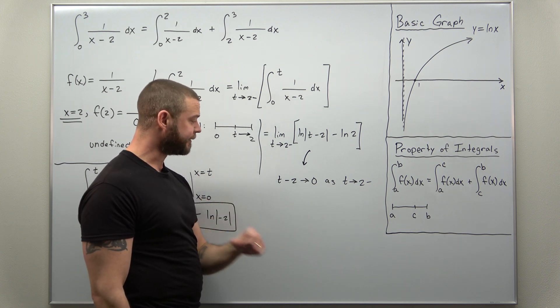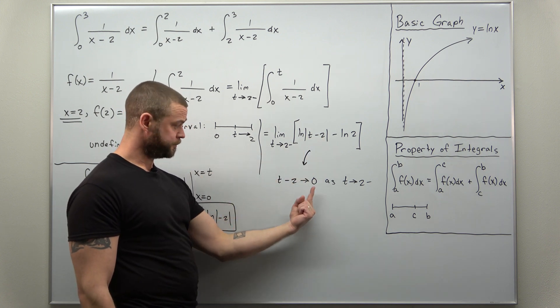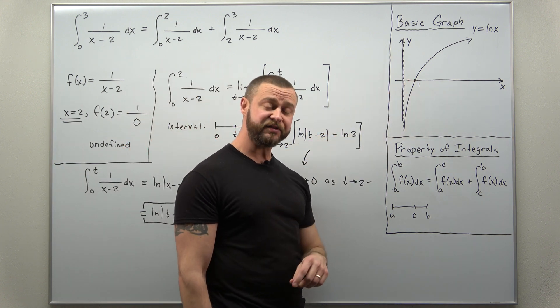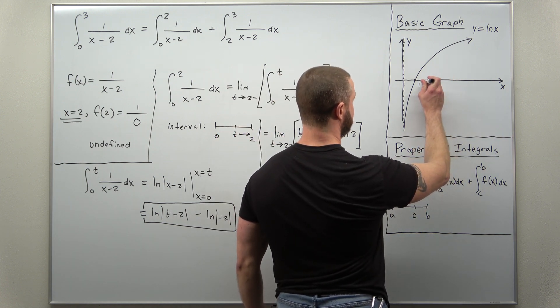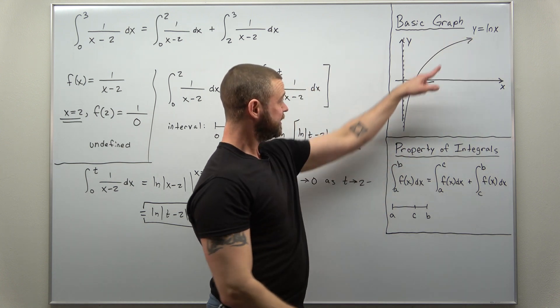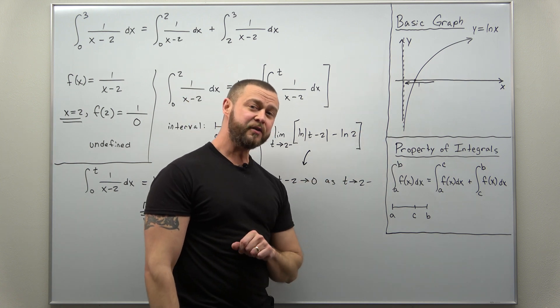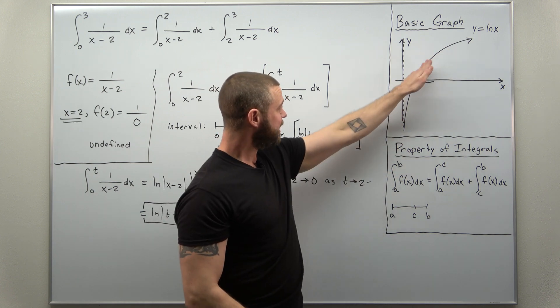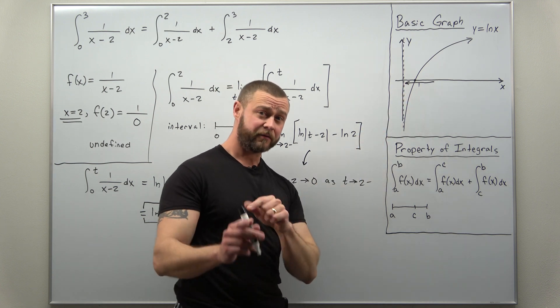Notice the inside here is approaching 0, so let's take a look at our graph of natural log and see what happens as we approach 0. So as you approach 0 moving along the graph, you can see as you get close to 0, the graph is going to approach negative infinity. The graph of natural log has a vertical asymptote and the function, the graph approaches that as you approach 0 from the right side.